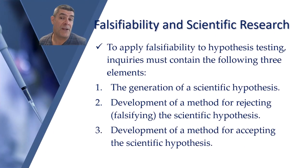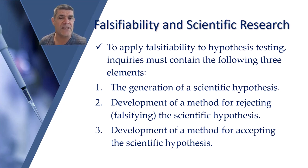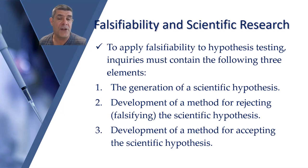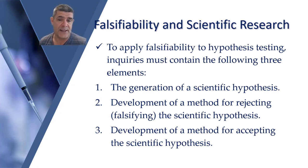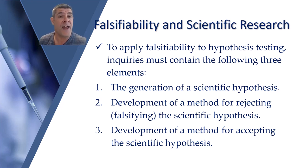What about falsifiability and scientific research? If we're going to apply falsifiability to hypothesis testing, then inquiries must contain three very important elements. Firstly, we must generate a scientific hypothesis. With that hypothesis in mind, we need to develop a method for falsifying or potentially rejecting that hypothesis. And we also need to develop a method for accepting the scientific hypothesis. A good experimental design will cover both points two and three — it won't necessarily prove anything is true, but it will either confirm what we suspect or allow us to identify that what we think is not the case.